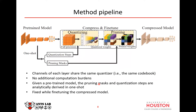In the pipeline: given a pre-trained uncompressed model, the method computes quantization steps and pruning masks required in one shot, performing parallel quantization and pruning. The full precision model becomes a quantized model, and quantized weights become pruned weights, resulting in a completely compressed model during fine-tuning. Channels of each layer share the same quantizer and codebook, adding no additional computational burden. Given any pre-trained model, pruning masks and quantization steps can be analytically derived in one shot and fixed while fine-tuning, eliminating iterative pruning or manual compression value search.